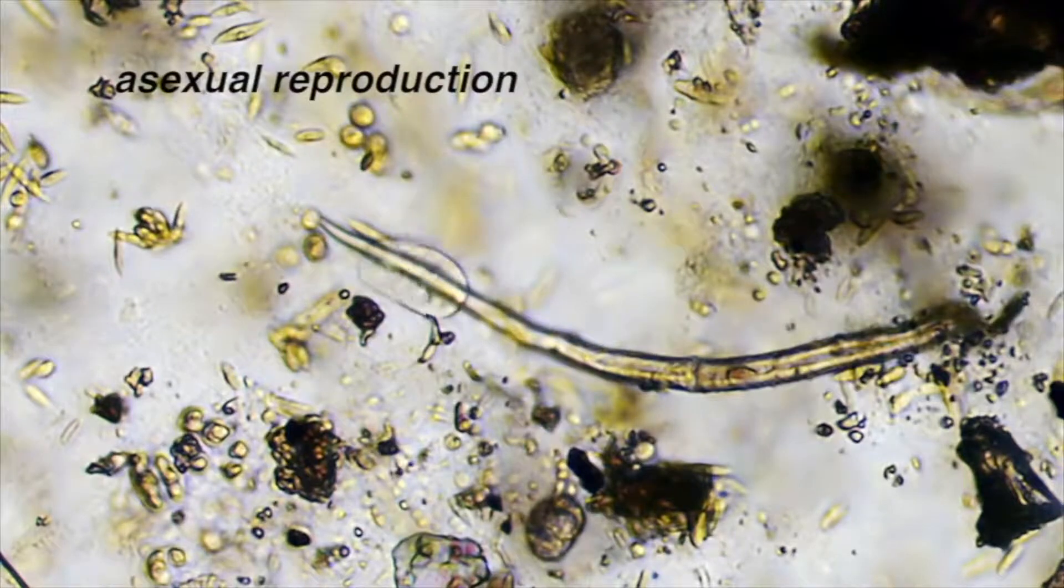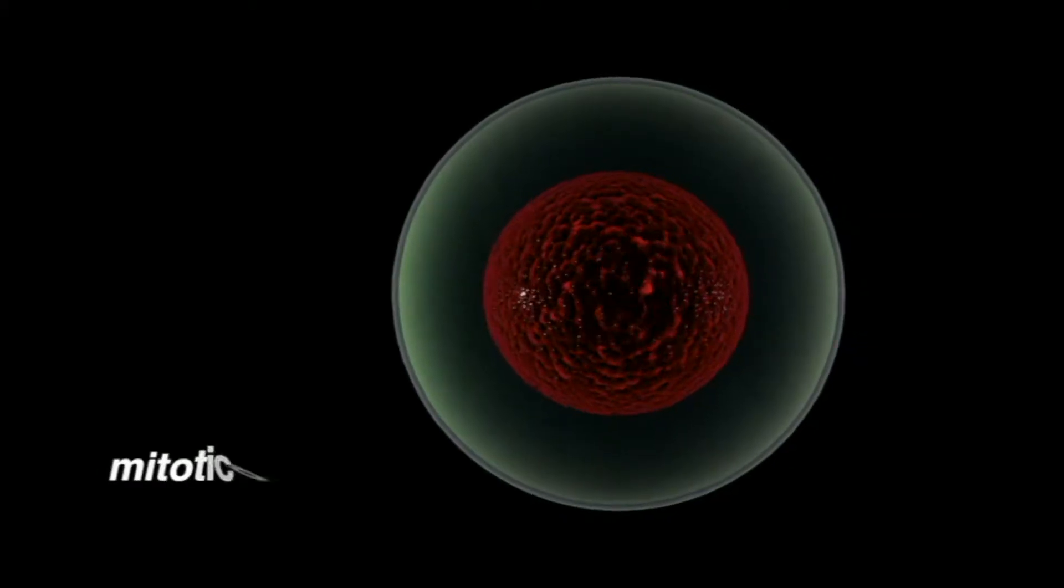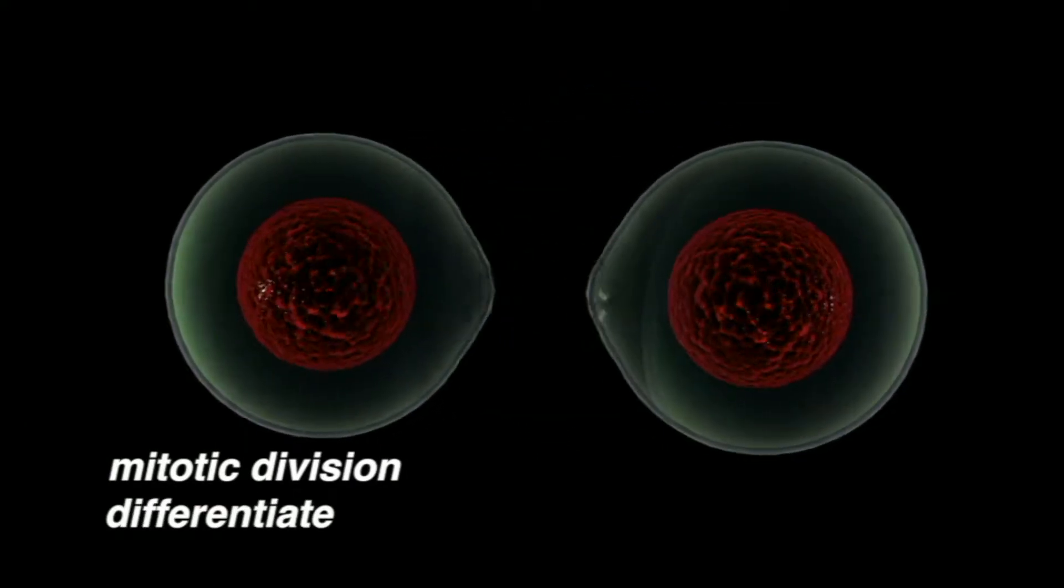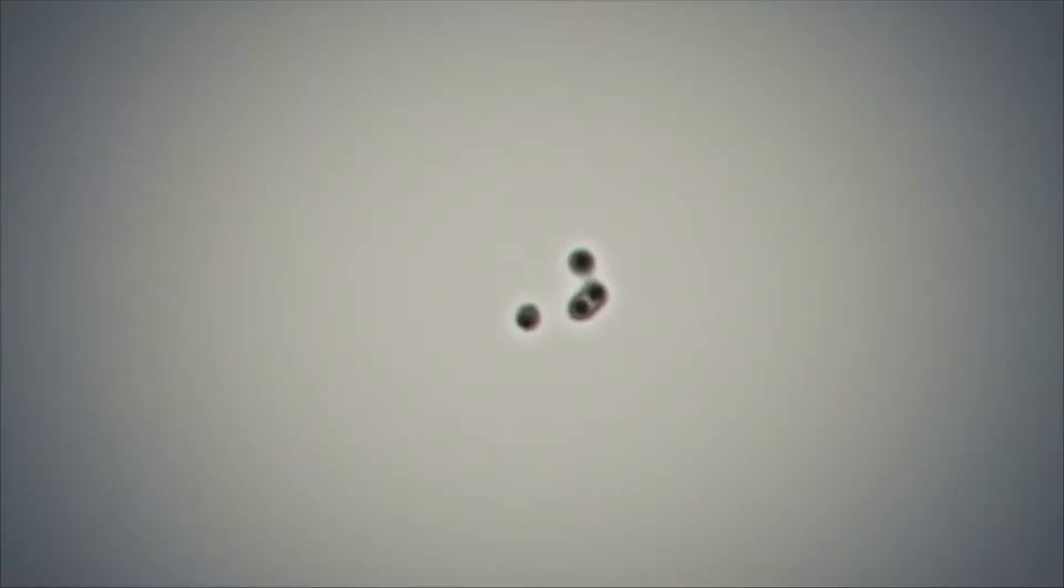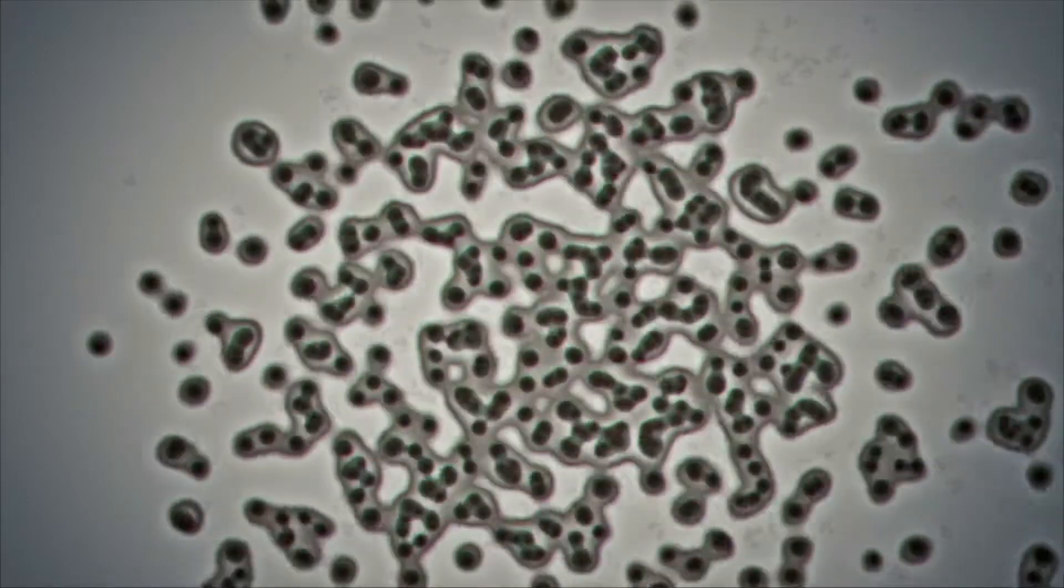Asexual reproduction generates offspring with only one parent. Cells reproduce by mitotic division and differentiate to create clones that are genetically identical to each other as well as the parent. Asexual reproduction produces very little genetic variation across generations. Any genetic variation is the result of genetic mutation.